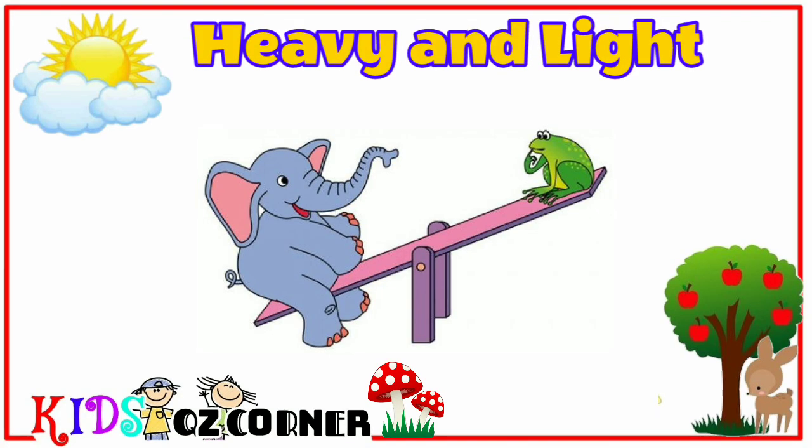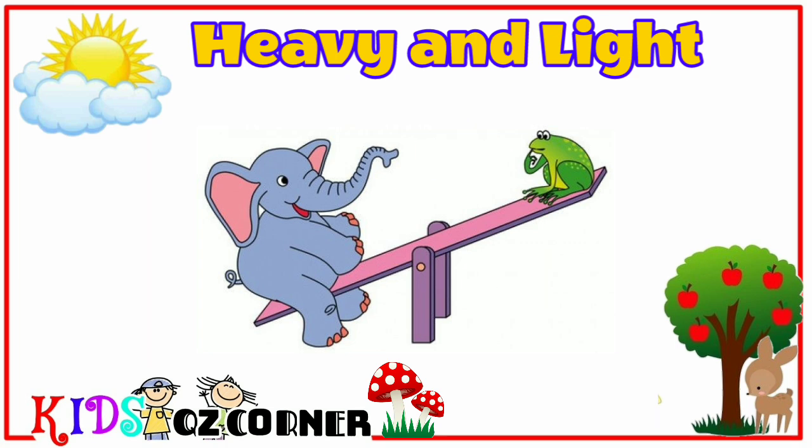Today we are going to learn about heavy and light objects. Look at the elephant and the frog in this picture — are they of the same weight? When we compare something based on their weights, we get heavy and light objects. For example, the elephant is heavy and the frog is light.